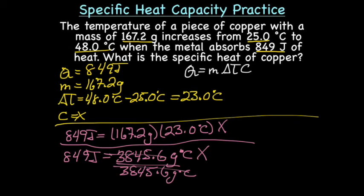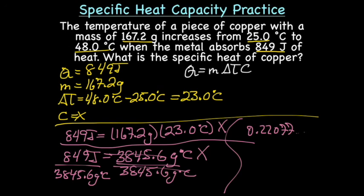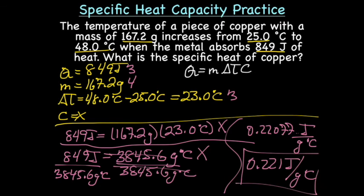So, let's cross out. And on this side, we'll have 845.6 grams degrees Celsius. And that gives us 0.22077, etc., joules per grams degrees Celsius. And that's how you calculate specific heat.